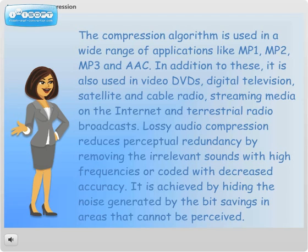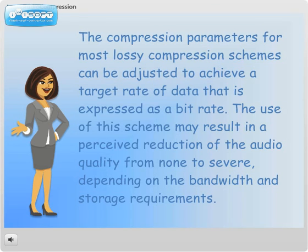Lossy audio compression reduces perceptual redundancy by removing the irrelevant sounds with high frequencies or coded with decreased accuracy. It is achieved by hiding the noise generated by the bit savings in areas that cannot be perceived. The compression parameters for most lossy compression schemes can be adjusted to achieve the target rate of data, expressed as a bit rate.